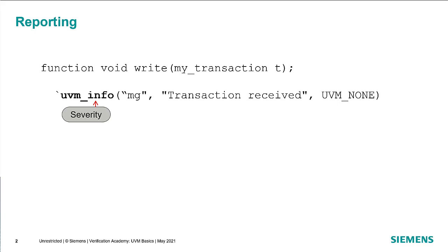There's also warning, error, and fatal. The first argument to the messaging macros is the originator or the ID. This could be the name of the company supplying the IP that's providing the message, the initials of the engineer who created it, or whatever you need it to be to indicate some useful information about how this message was created.